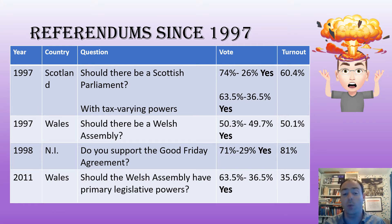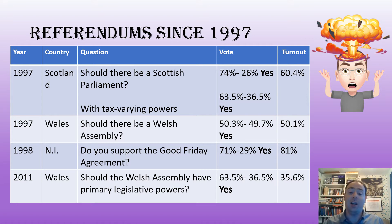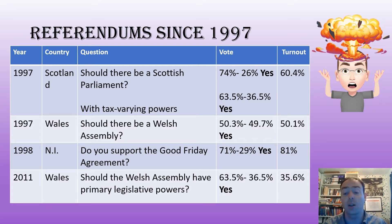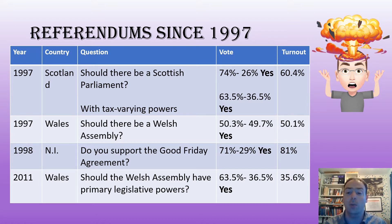In 2011 we saw the question: should the Welsh Assembly have primary legislative powers? We now see a far more positive response with 63.5% saying yes, so that one passes. But if we look at the turnout we again get the feeling of maybe a lack of enthusiasm for devolution in Wales, with not much more than a third of the eligible population turning out to vote.